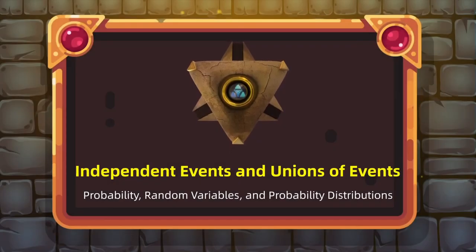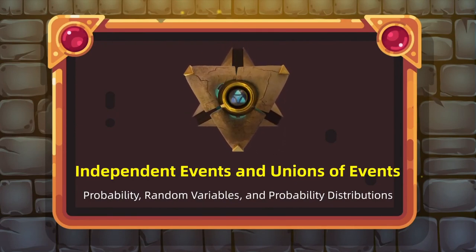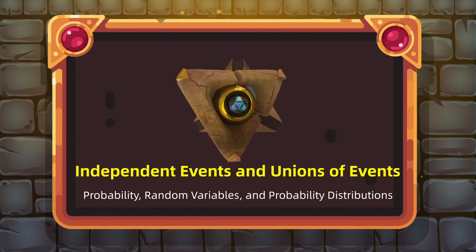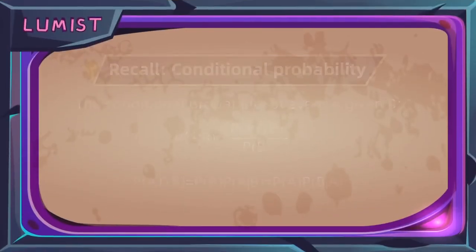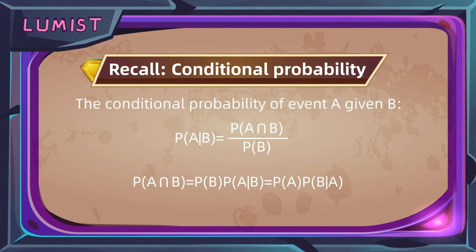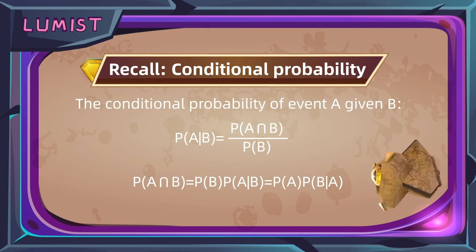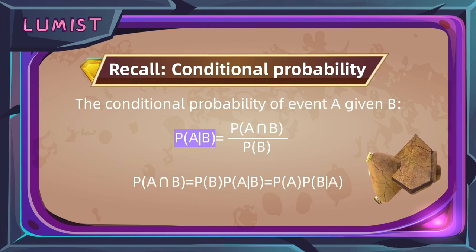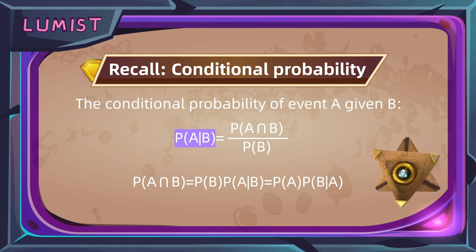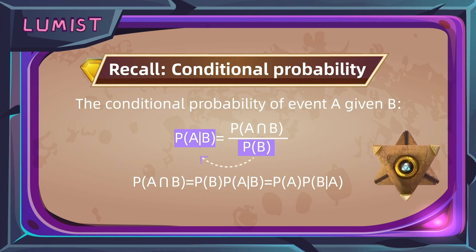This lesson is the last part of the discussion of conditional probability. The topic is called independence — something we have seen when we discussed two-way tables. Today we will discuss its formal definition and related calculation properties. To understand independence, we first recall conditional probability: P(A given B) equals P(A intersect B) divided by P(B), which can also be written as P(A intersect B) = P(A given B) times P(B).